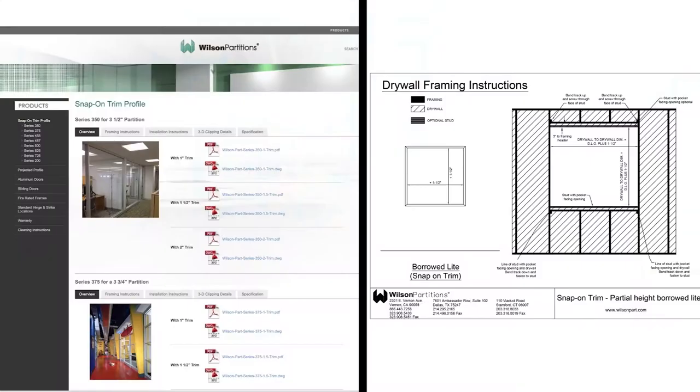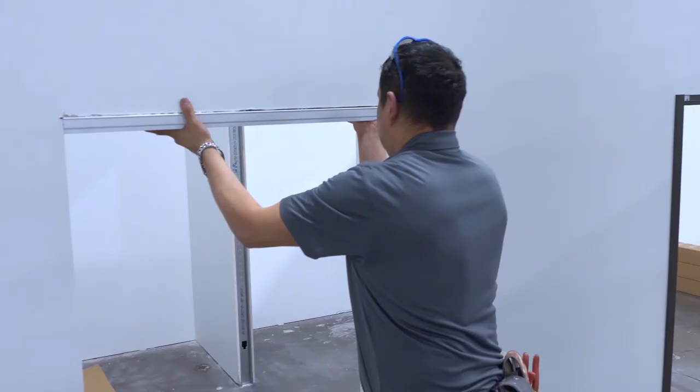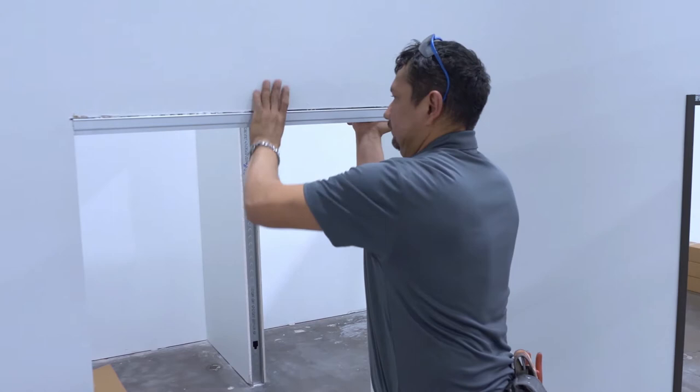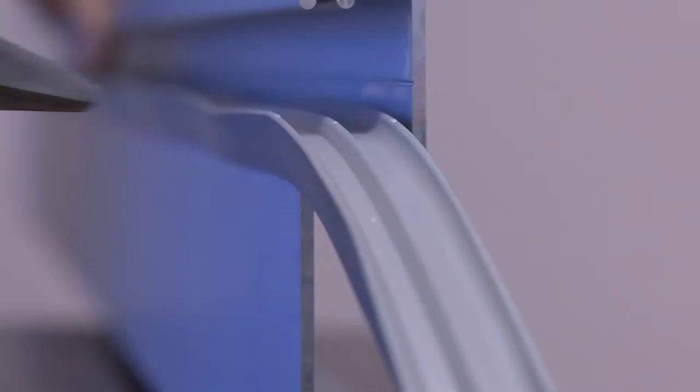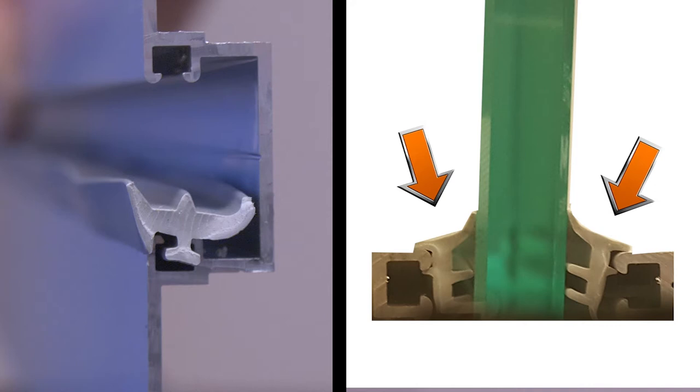Refer to the drywall framing instructions on our website for important information regarding stud placement and other framing requirements. First, slip the header over the drywall and center it on the opening. If the frames are shipped with factory installed vinyl on one side, trim the vinyl as necessary. Note that push-in vinyl is available for both sides of the glass.